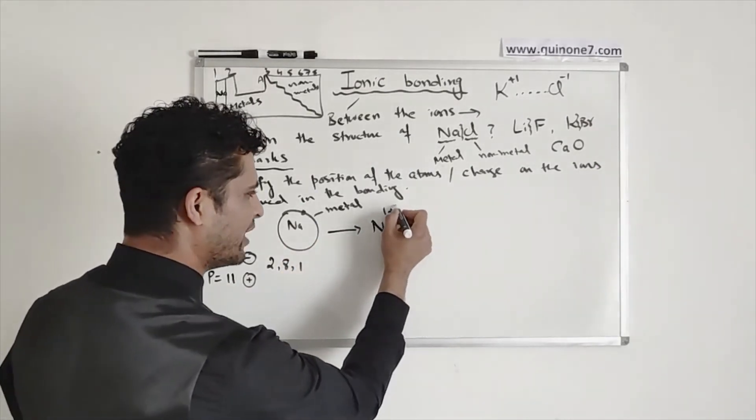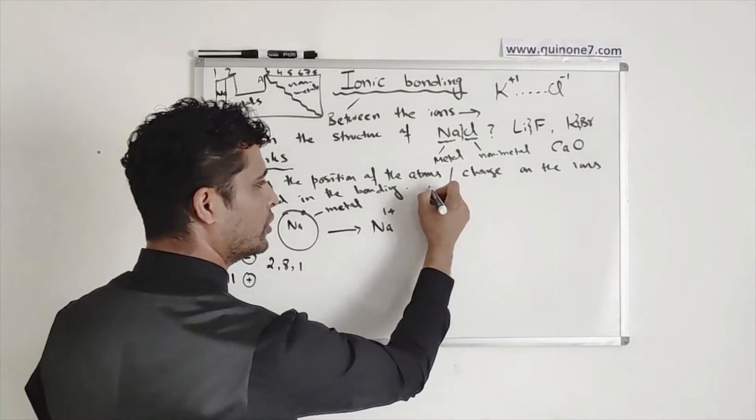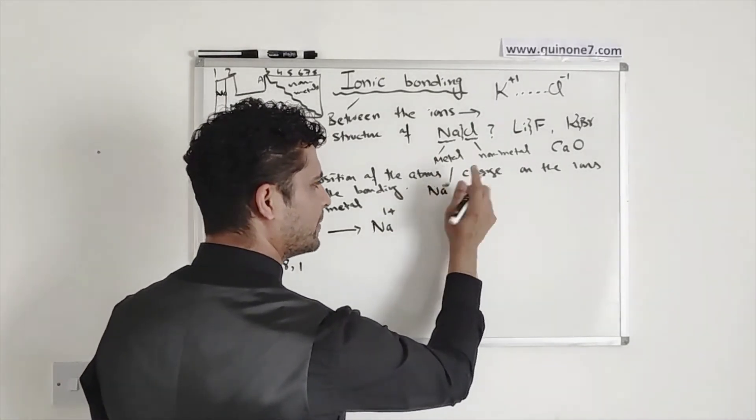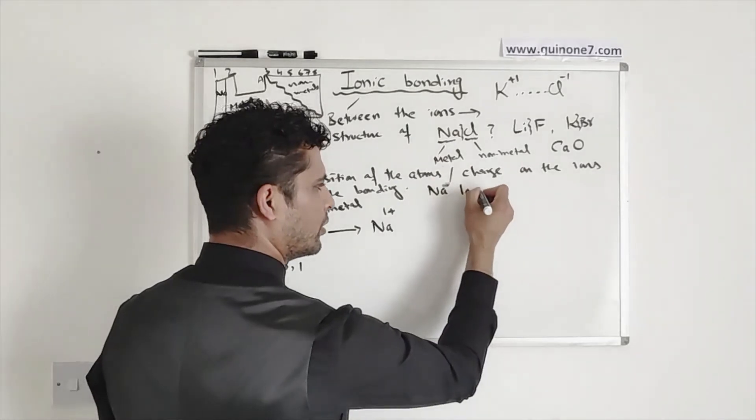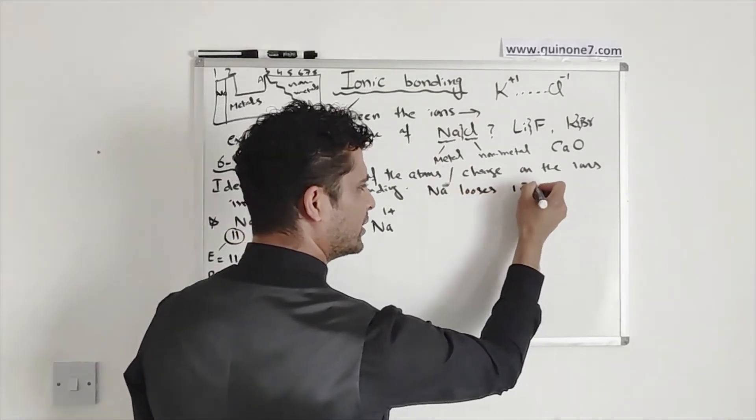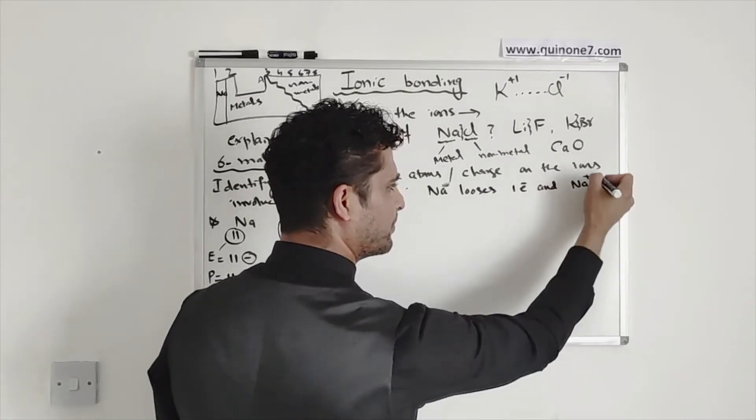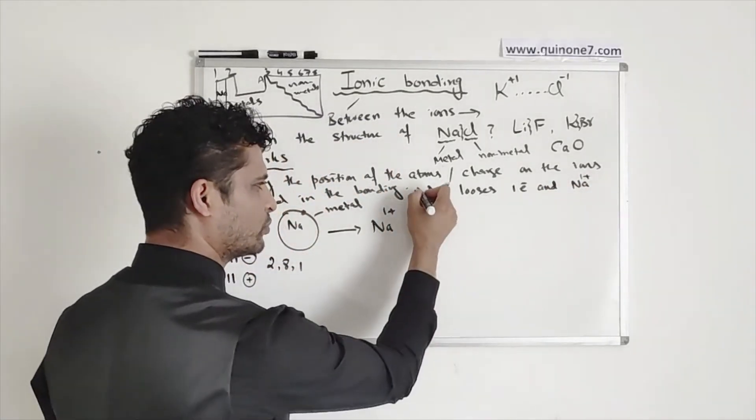Now, on the other hand, once you have made this, so in the six marker question, you will say sodium atom loses one electron and converts into an Na plus 1 ion. That's one mark.